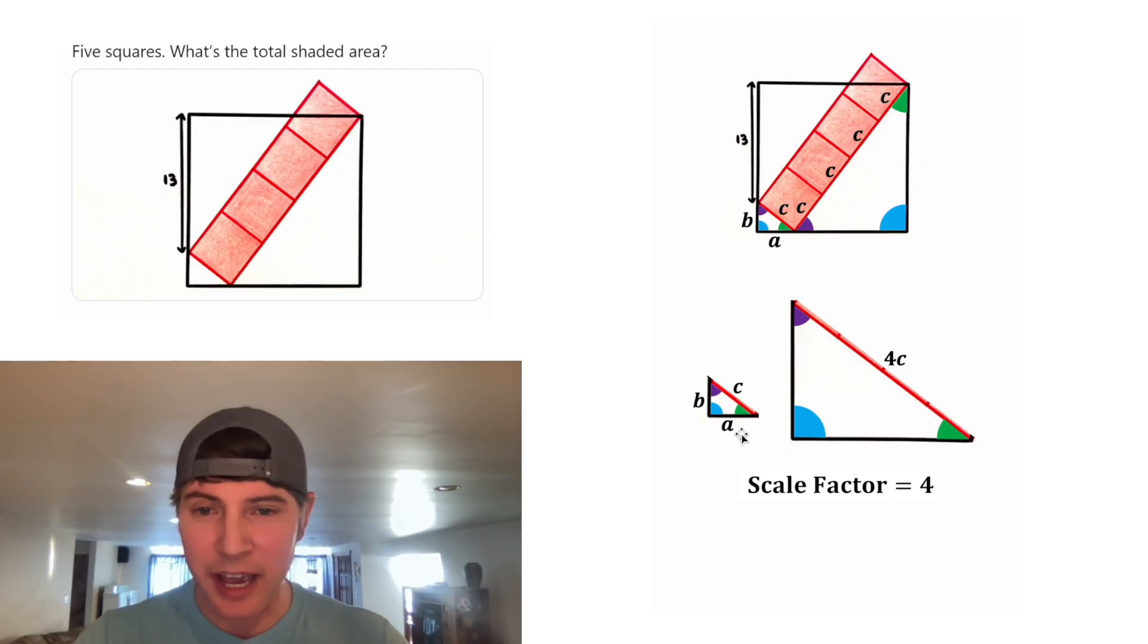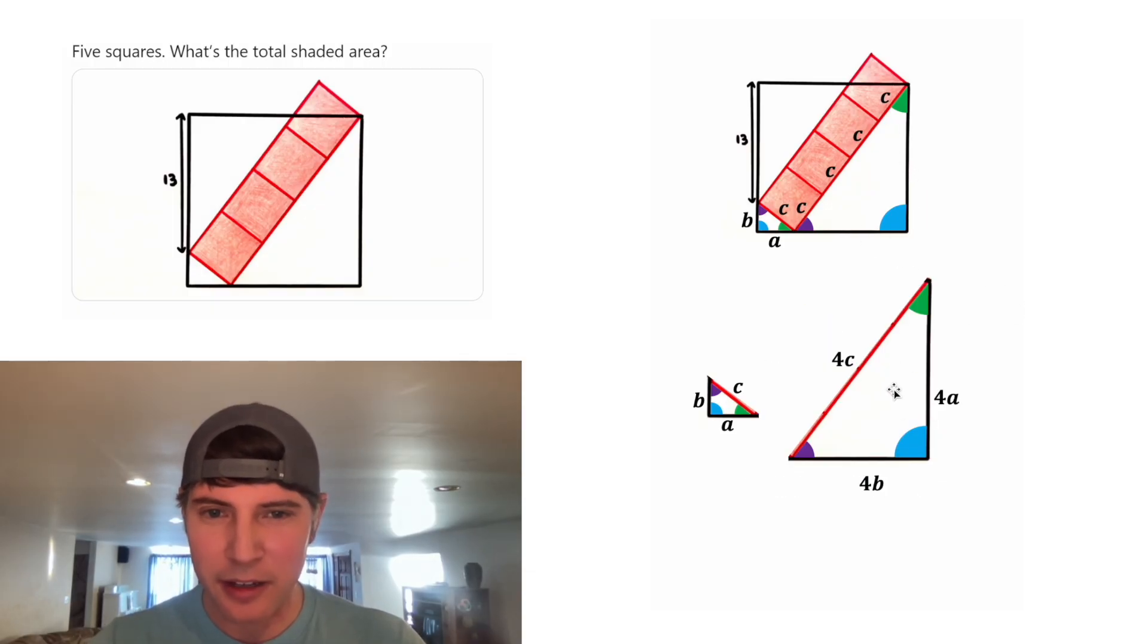To get the base, we're going to multiply A times four to get four A. And to get this height, we're going to multiply B times four to get four B. And now we know these sides, so we can update this figure. Let's rotate this triangle back and you can see that the four B goes there and the four A goes there. So that looks pretty good.